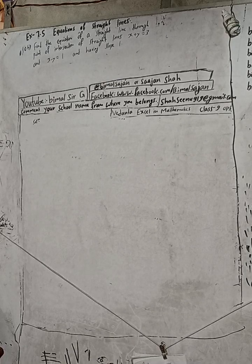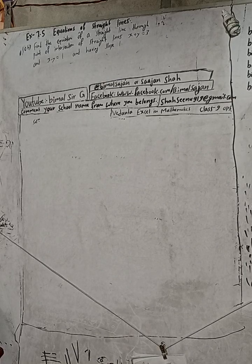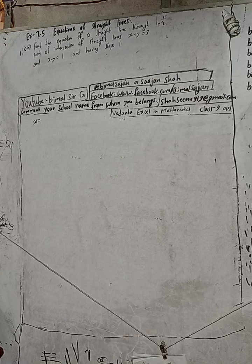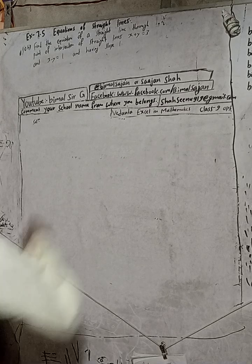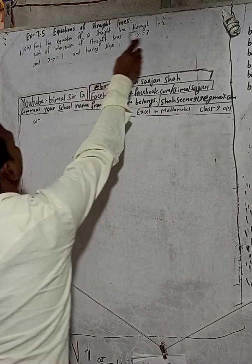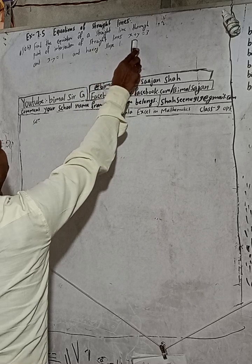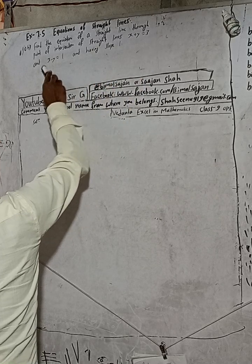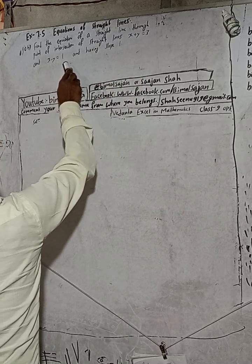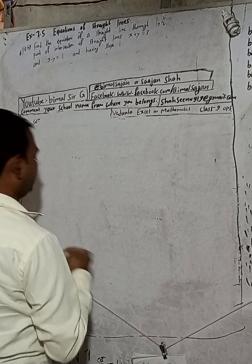Hi class 9 and 10 students, welcome back to Bimal Sir's YouTube channel. This is question number 10b, exercise 7.5, equations of a straight line, class 9 optional mathematics. The question is: find the equation of a straight line through the point of intersection of the lines x plus y equals 3 and x minus y equals 1, and having a slope of 1.